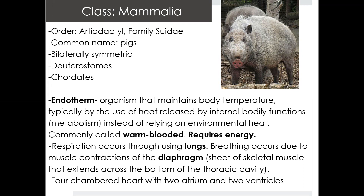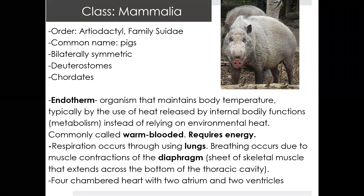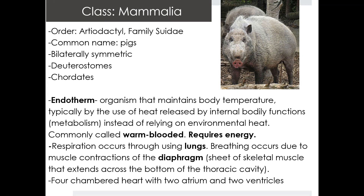The difference in mammals versus frogs is that breathing occurs due to the muscle contraction of the diaphragm. The diaphragm helps to pull air into the lungs, suctioning it in and then pushing it out. The diaphragm is a sheet of skeletal muscle that extends across the bottom of the thoracic cavity and allows for the expansion and contraction of the lungs. We also have a four-chambered heart, which consists of two atria and two ventricles. Comparing to our amphibian heart, the amphibian heart had two atria and one ventricle, which represents a major development in helping pigs be endotherms.